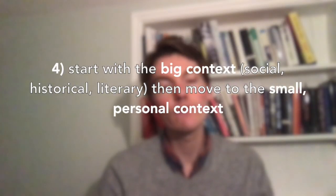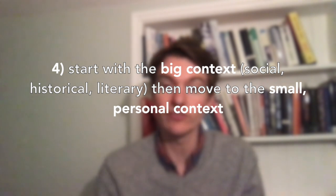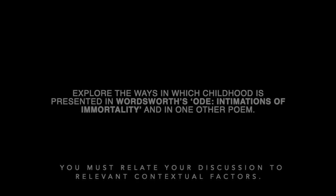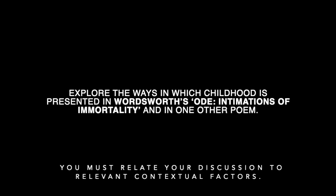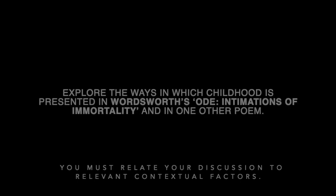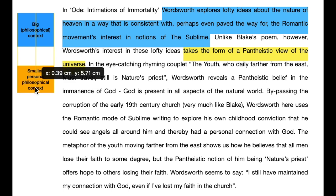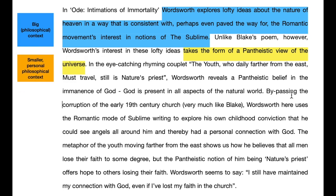Tip number four: move from the big context to the small personal context for each poet — both in your essay and in each paragraph. Here's a third example question: 'Explore the ways in which childhood is presented in Wordsworth's Ode: Intimations of Immortality and in one other poem.' Here's a really good example paragraph beginning to answer this question. What you can see is that the writer has moved from the big context — that is, the Romantic movement's interest in notions of the sublime, a philosophical idea that the whole movement was really interested in — to something smaller and more personal, which is Wordsworth's take on that philosophy: his pantheistic view of the universe.